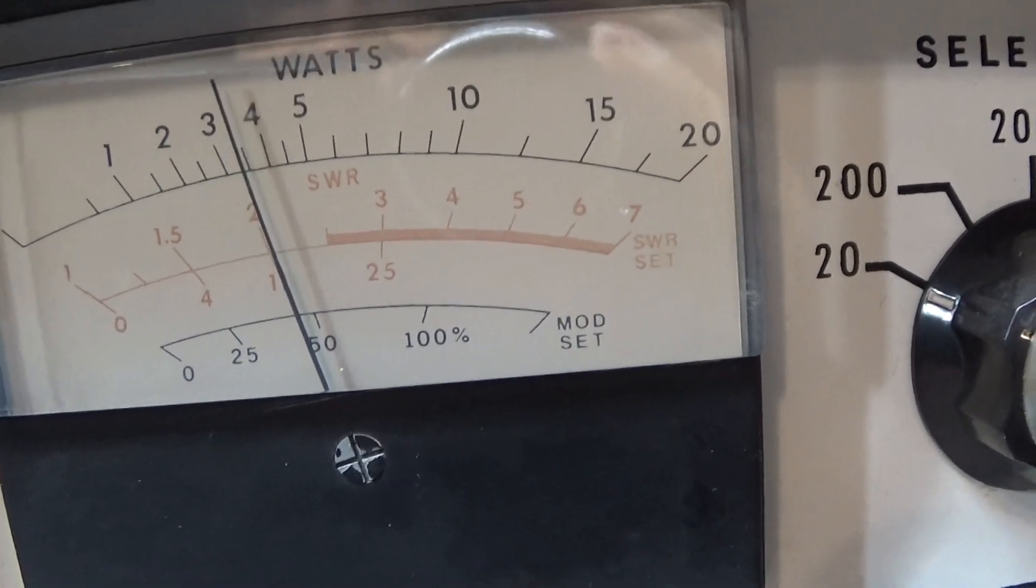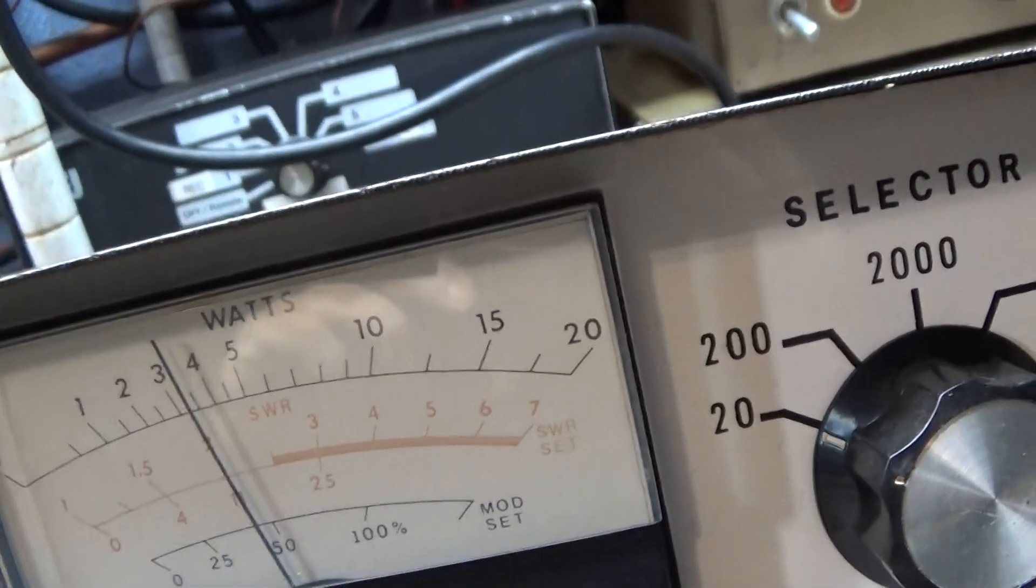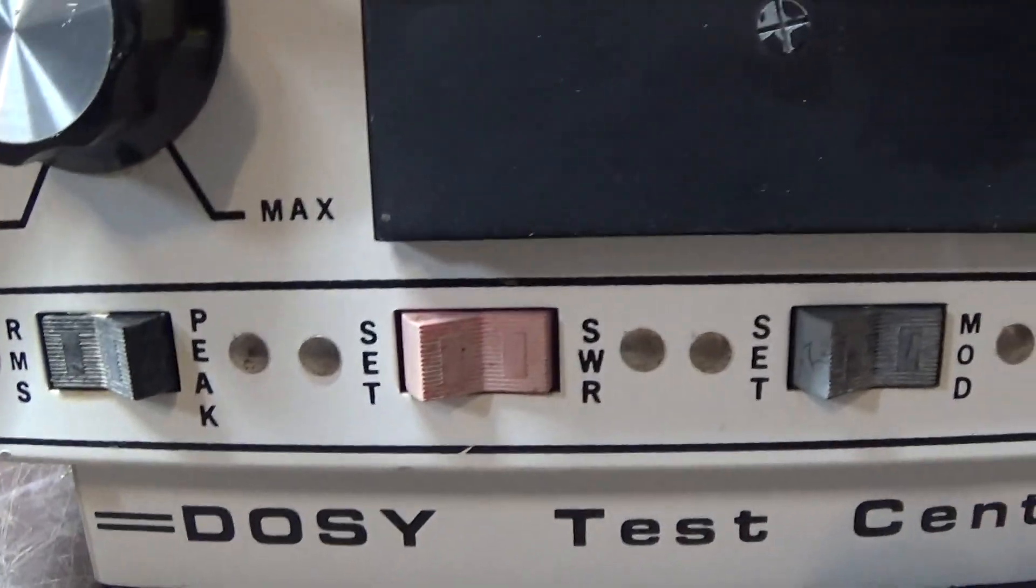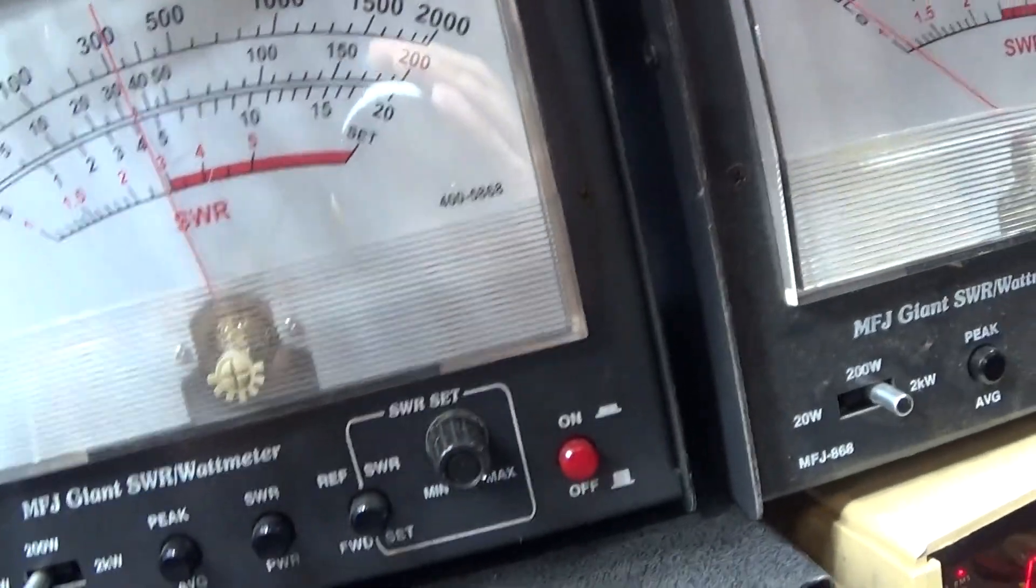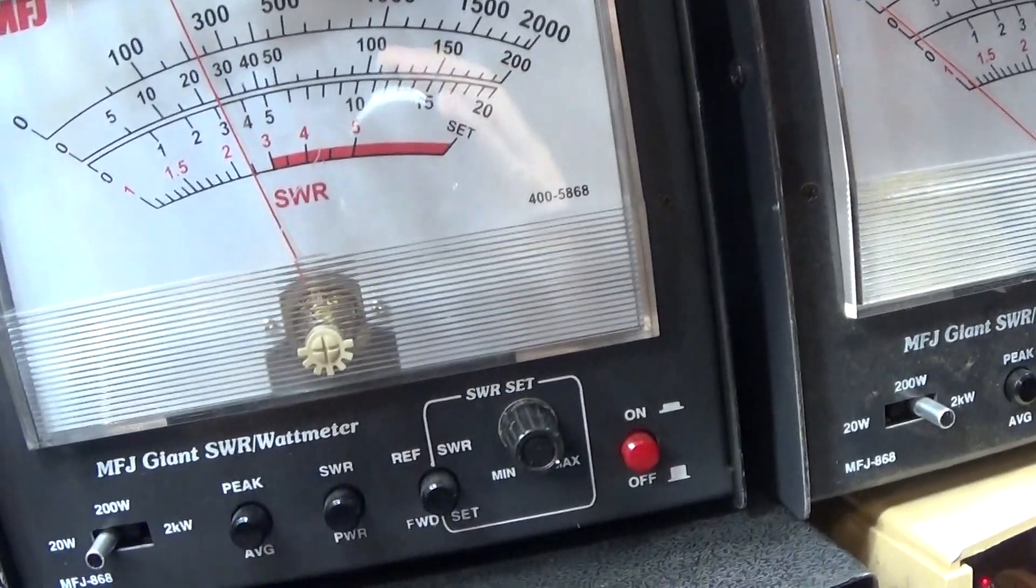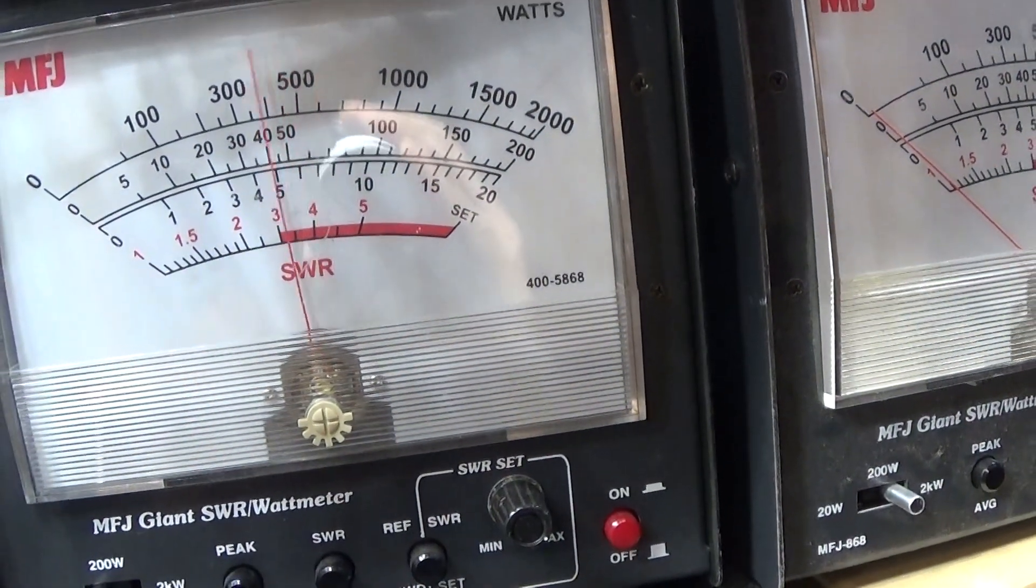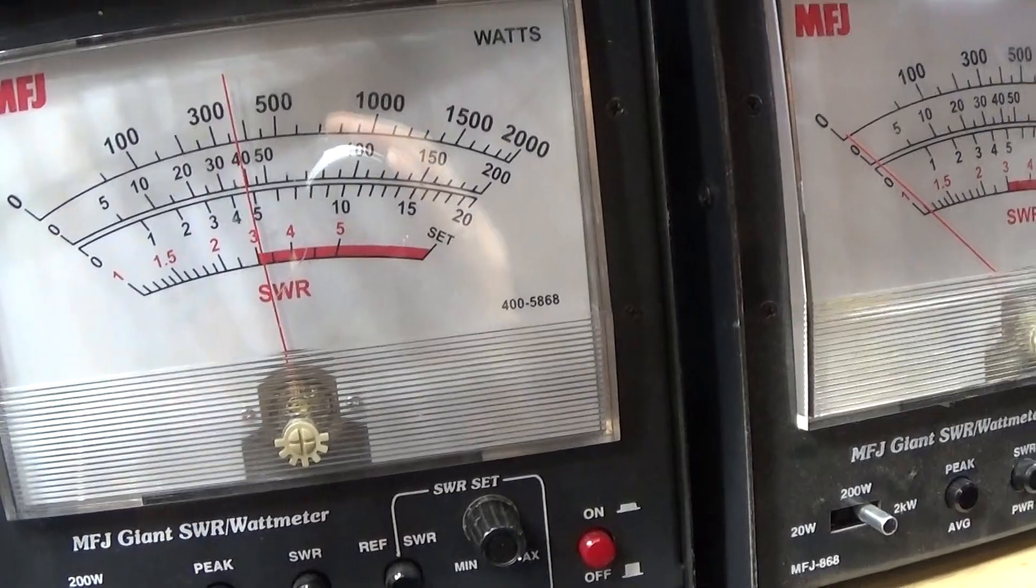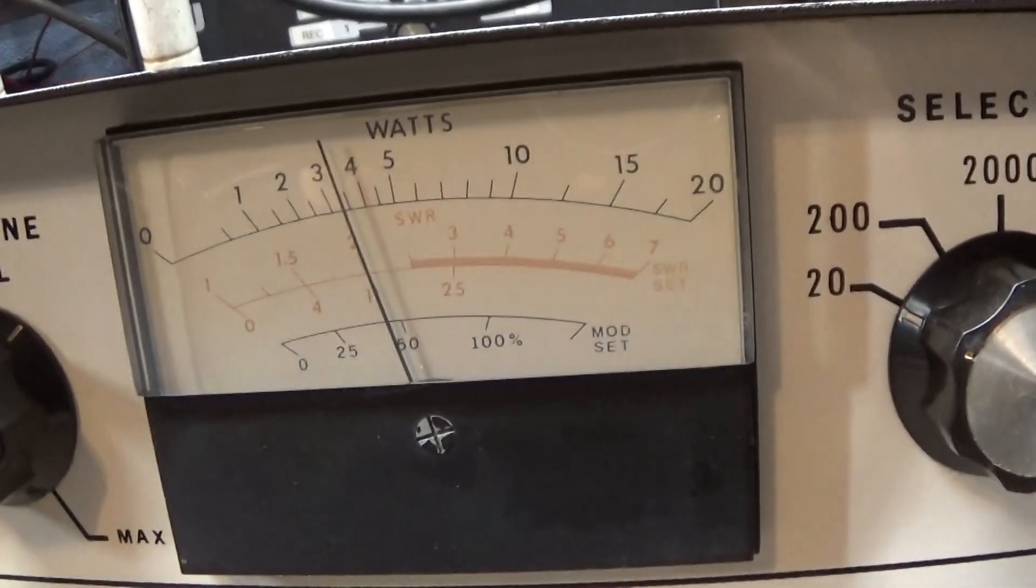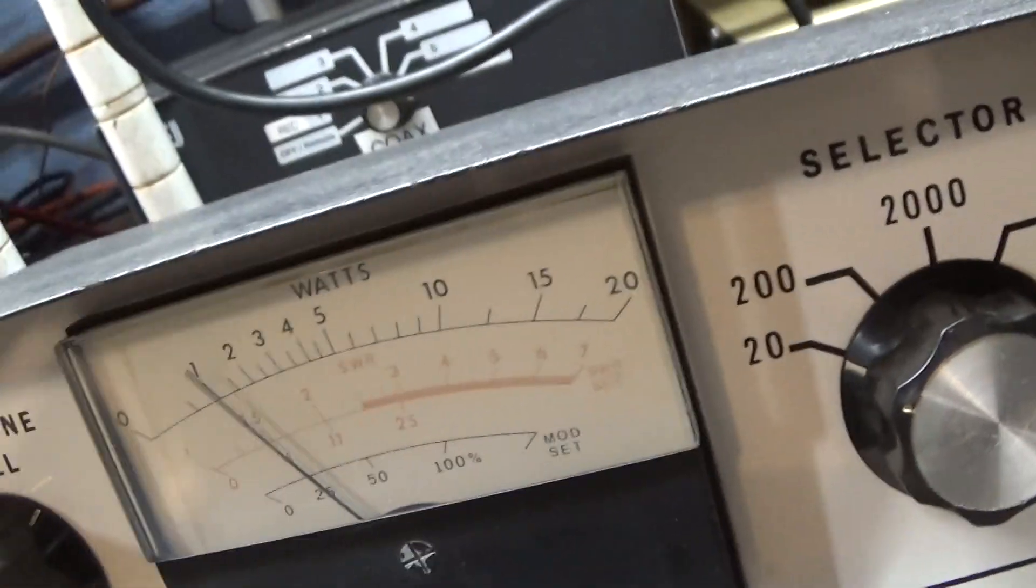That's our average. And over here on the MFJ, we're on average audio, so on average the MFJ is showing a lot more swing than the Dozie.